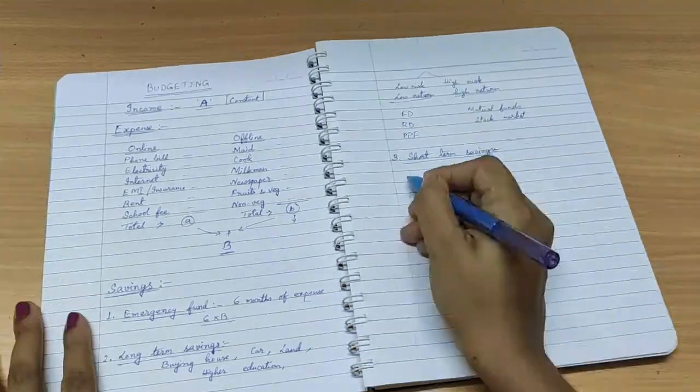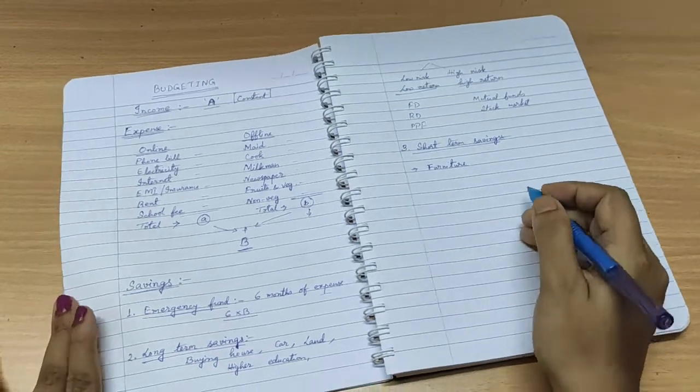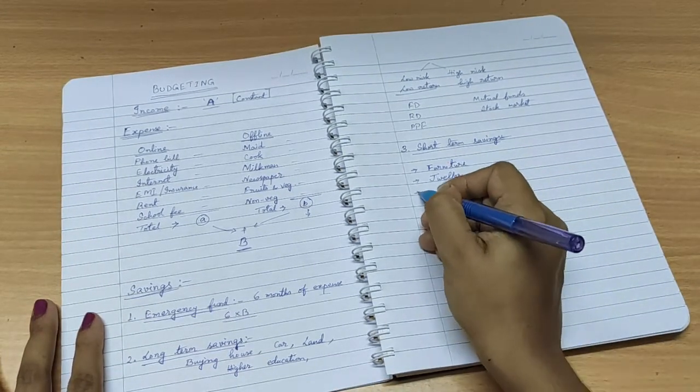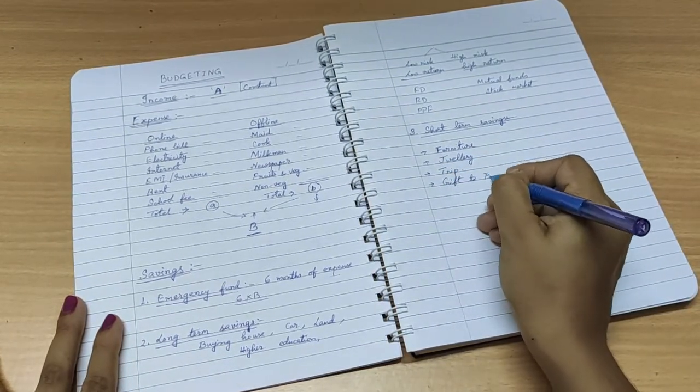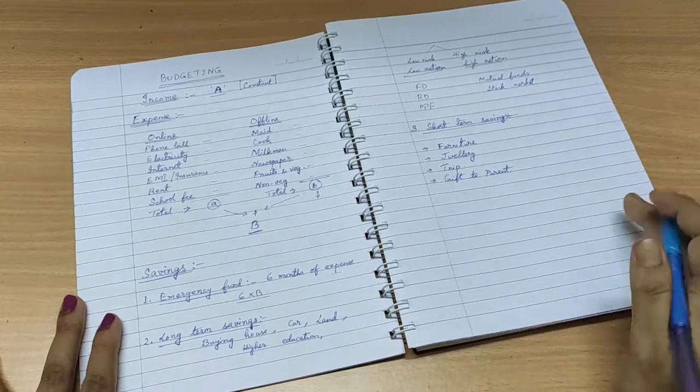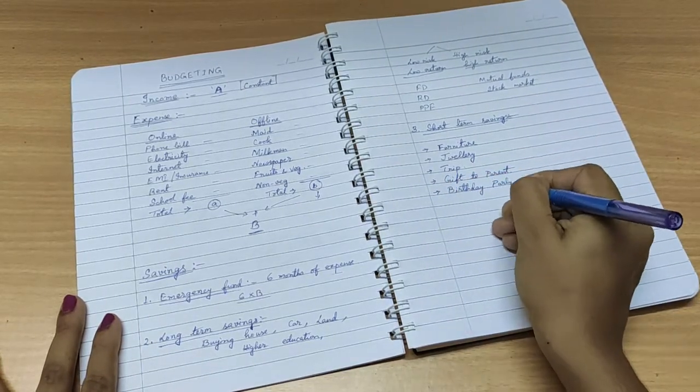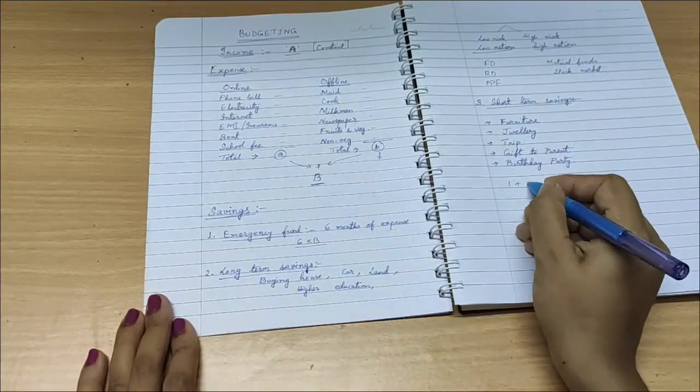The last category of savings is short-term savings, which you can use to buy a furniture, jewelry, for any travel trip, for anniversary gift to your parents, or organizing birthday party for your kids, or anything immediate purposes like that. And you have to make a minimum contribution to this fund per month also. So all these three categories - emergency fund, long-term savings, short-term savings - together contribute to your total savings.